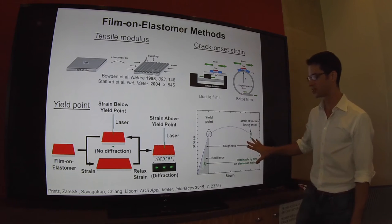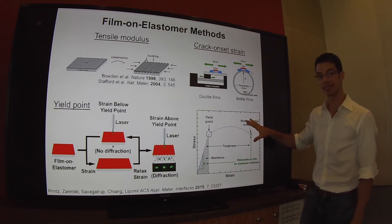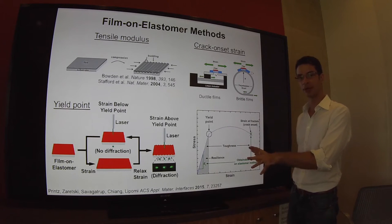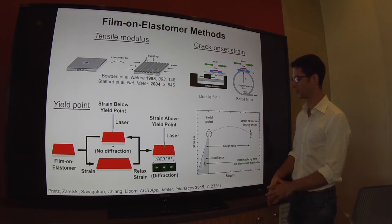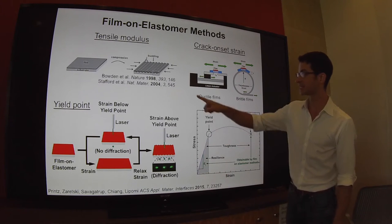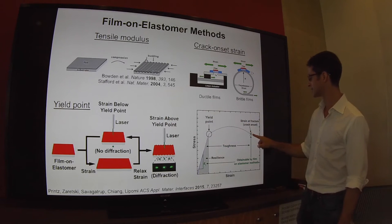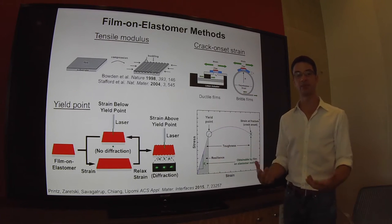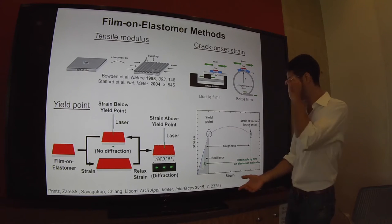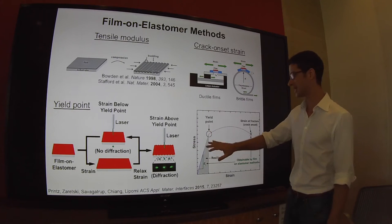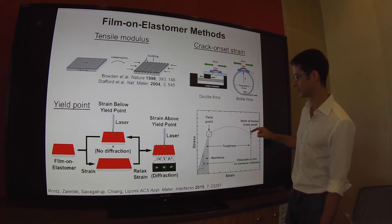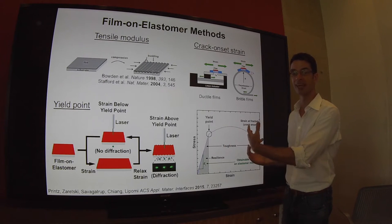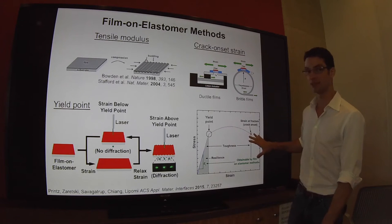We can put all this information together to generate a rough sketch of the pull testing behavior. The slope in the elastic regime is the tensile modulus, the yield point is determined using this technique, and the strain at fracture is determined by the crack onset strain. The area under the curve here is the resilience, the amount of energy absorbable per unit volume by the material in its elastic regime. We can get a rough estimate of the toughness, the total amount of energy density absorbable by the material until it finally fractures.